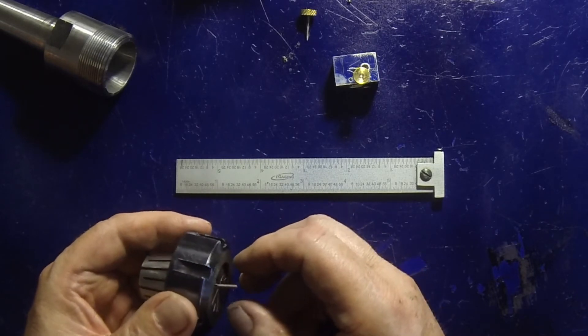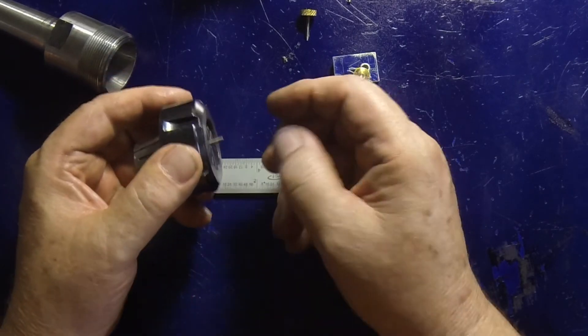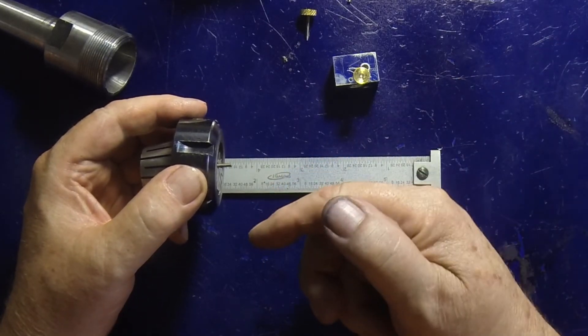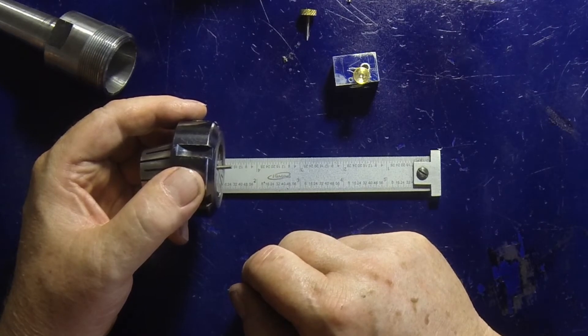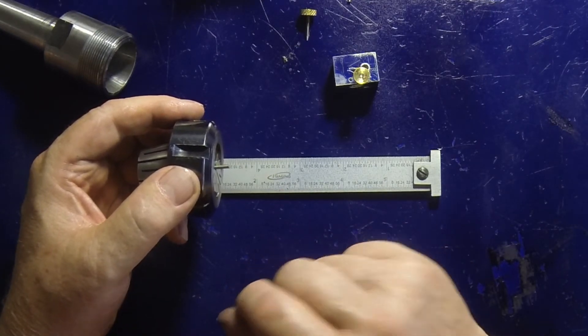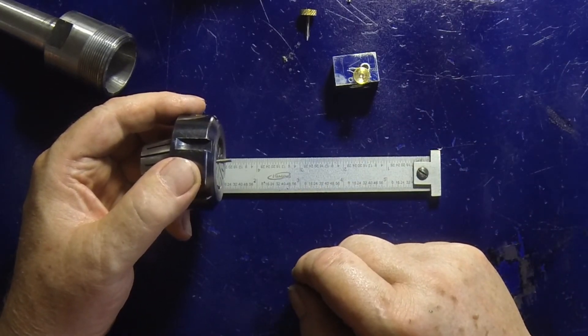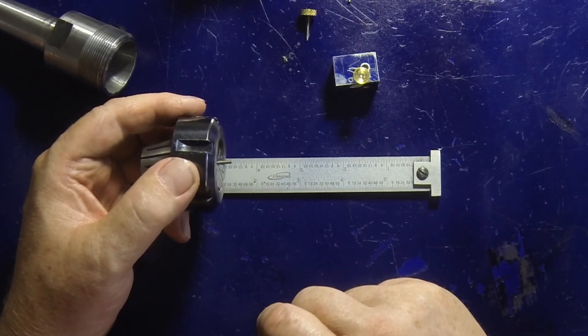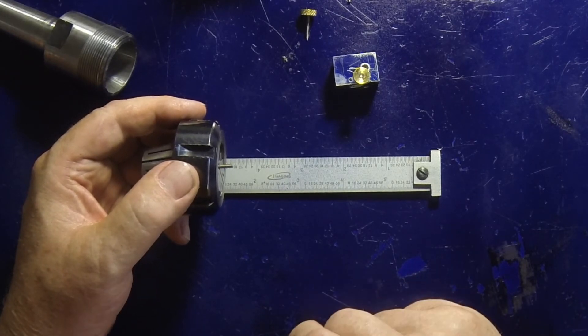You just leave a little bit exposed, then your compound comes in and cuts it off. Then you just add a couple more thou each cut with the cross slide and go back and forth with the compound, add in a little couple more thou and go in until you get a needle point.